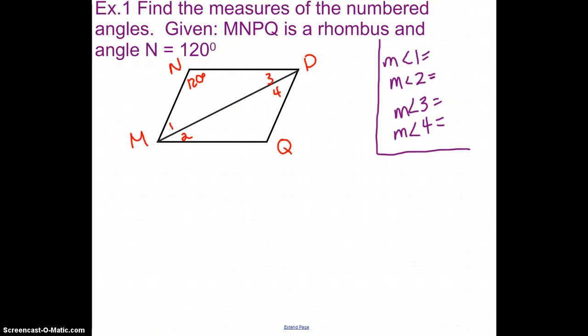First of all, if this is 120, I know eventually this one's going to have to be 120. Because if it's a rhombus, it's a parallelogram. So I know this one's 120. I also know that I'm going to have to have angles that get bisected. So that means that I have to know that 1 and 4 are the same.